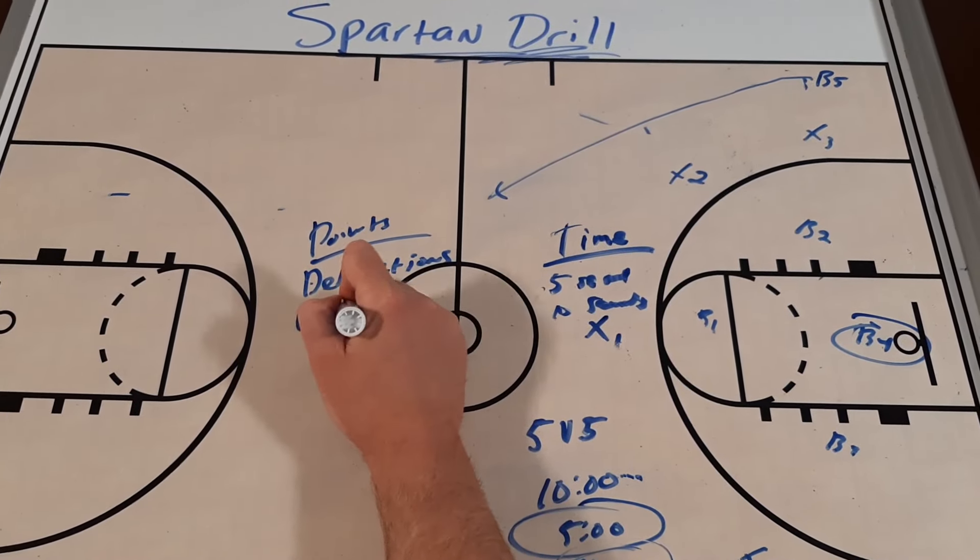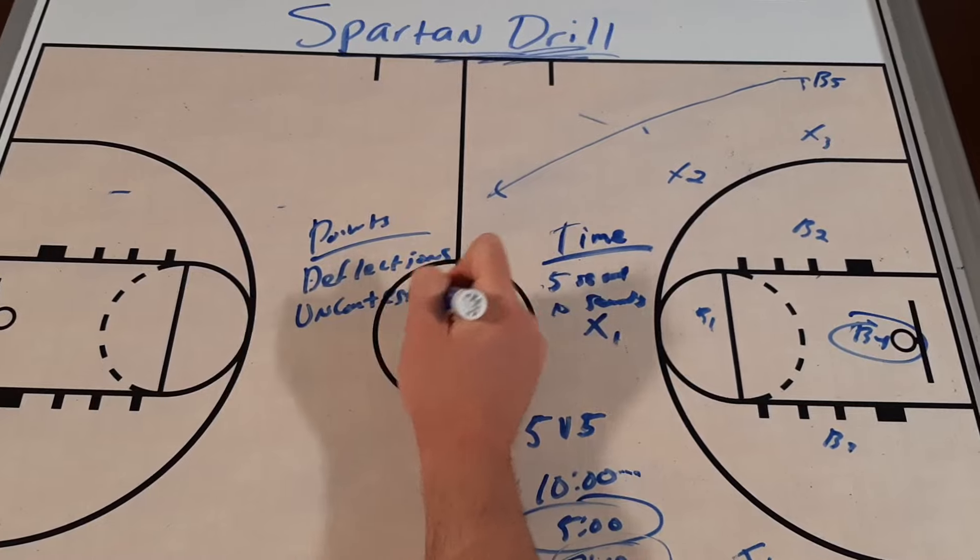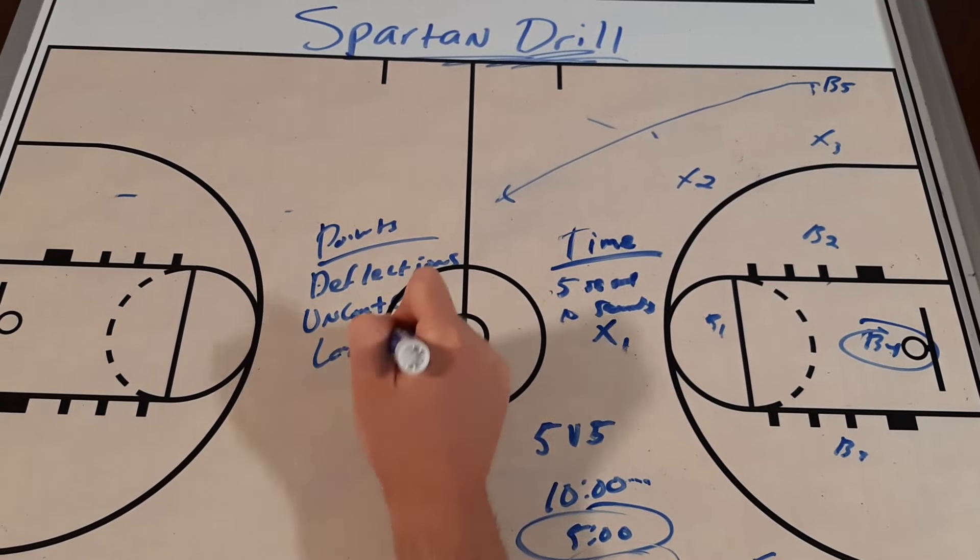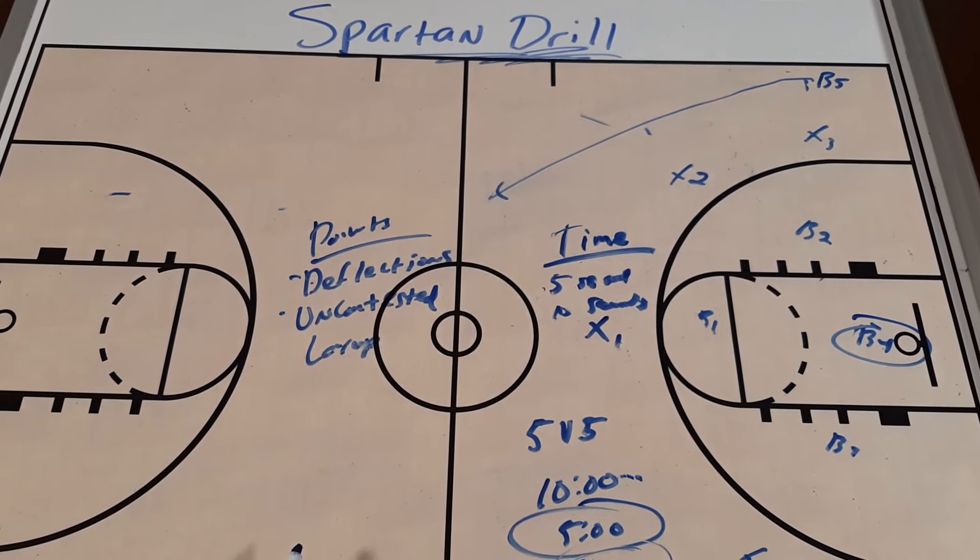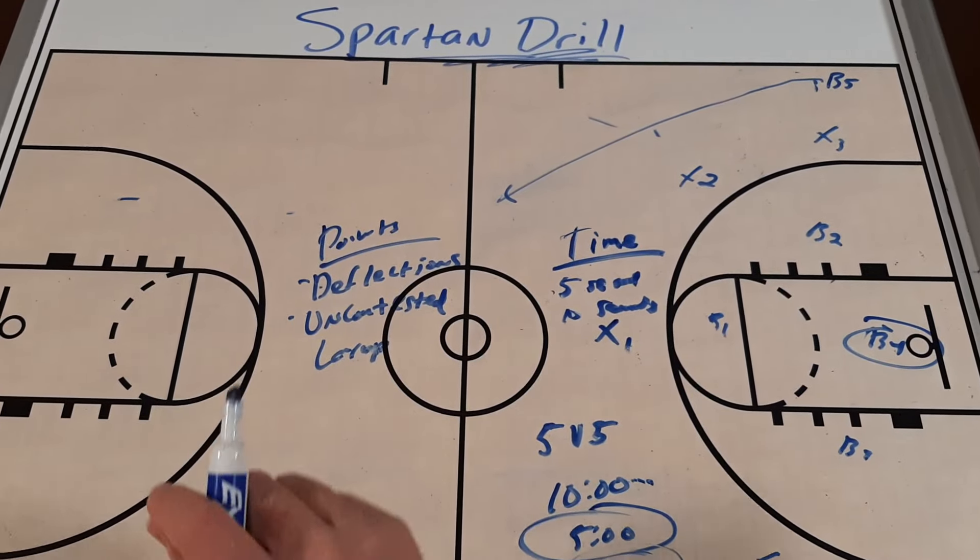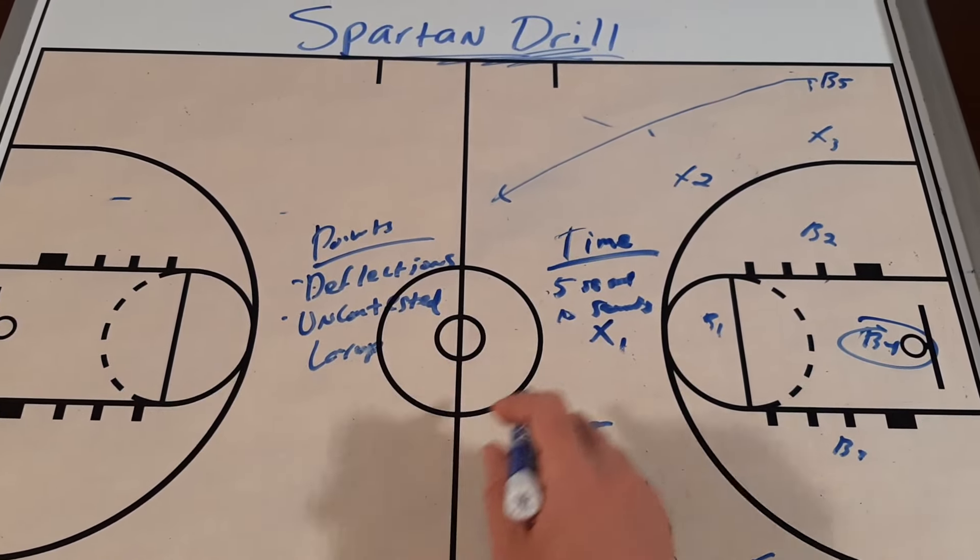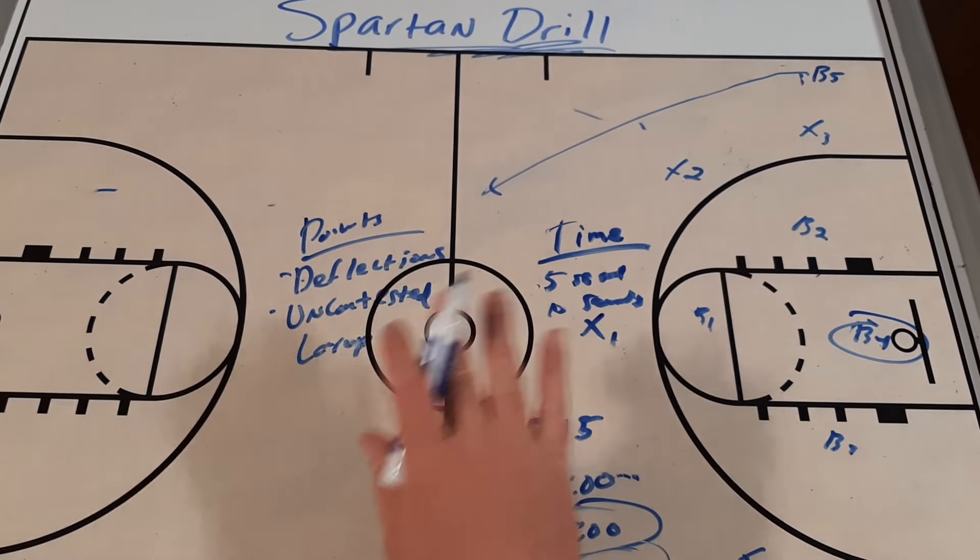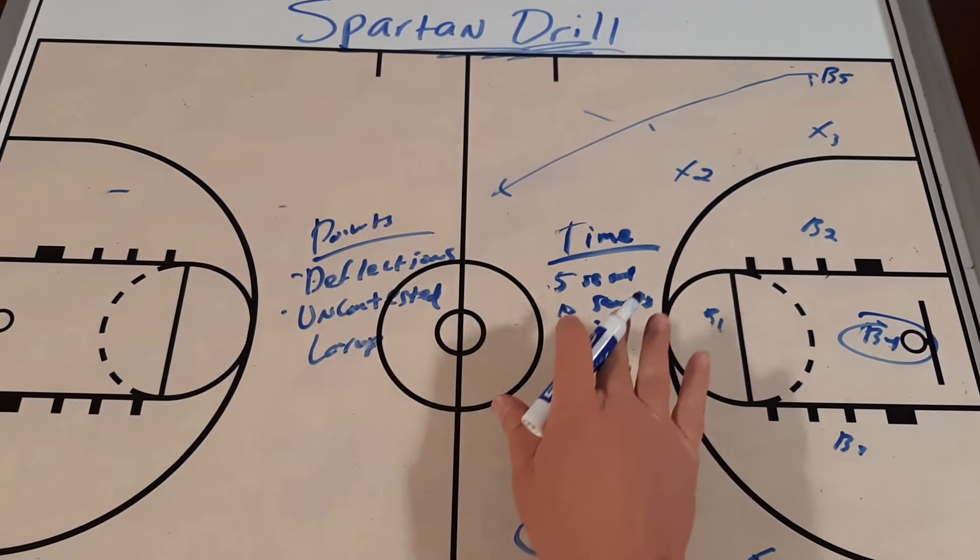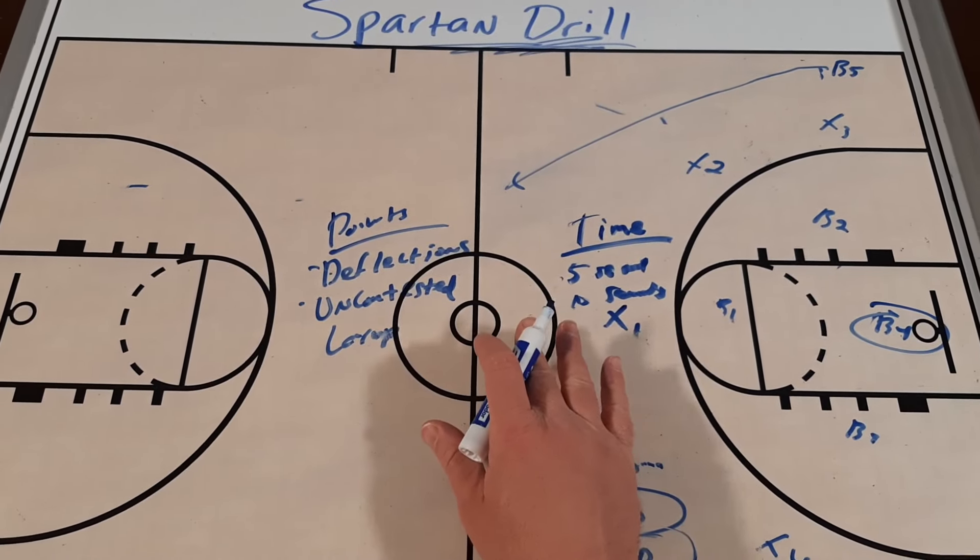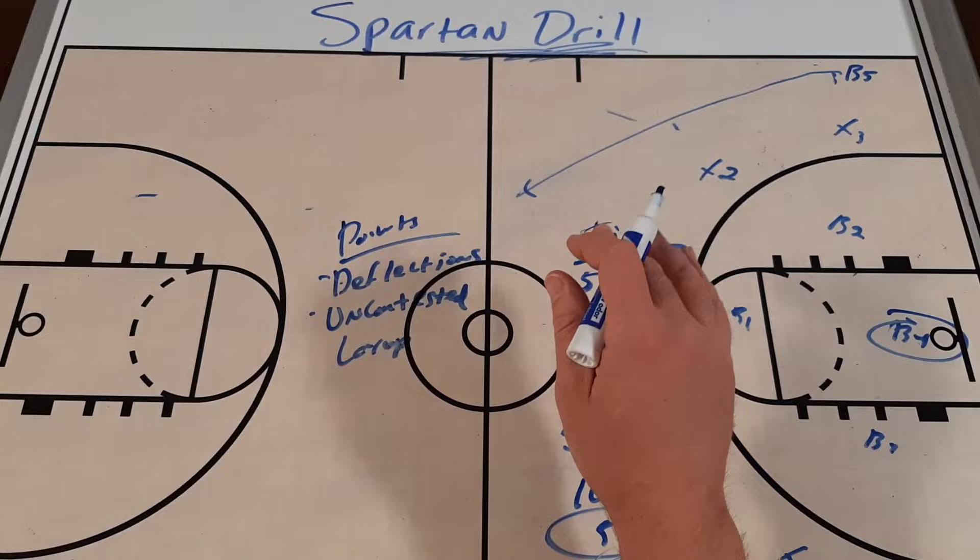Points for deflections, points for an uncontested layup. You could give double points if you want to emphasize points in the paint or three-pointers. So like any small-sided game or game situation, you can award the points that you want.